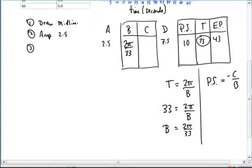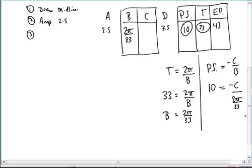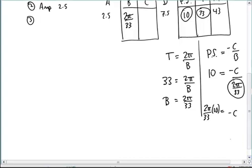So my phase shift that I found from the graph is 10, and that's equal to negative c over the b value we just calculated, which is 2π over 33. It looks like a really ugly number, but to calculate the c value, we would just multiply both sides by 2π over 33. And then this will result in our phase angle to be negative 20π over 33.